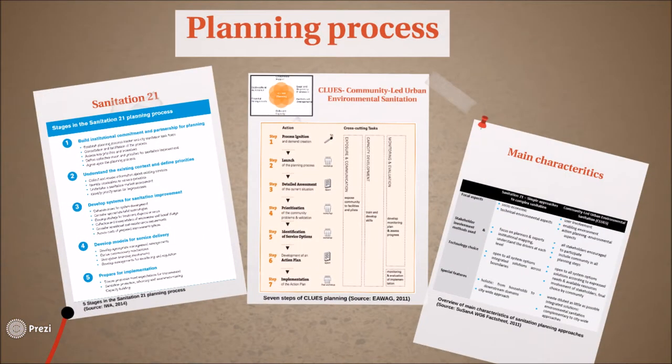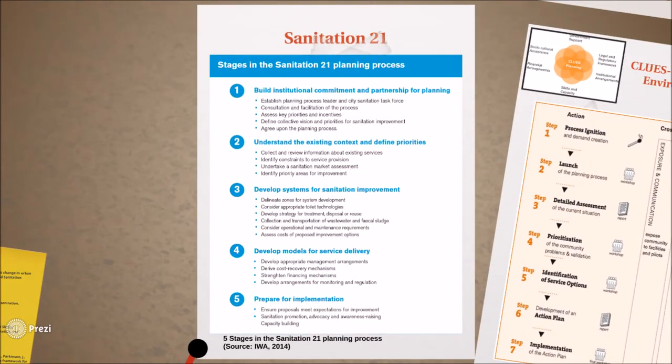Finally, this video presents some interesting and useful planning processes. The first is Sanitation 21, an important component of the Global Sanitation Toolkit, which presents a framework based on internationally recognized practices. This framework was initially developed in 2006 as a tool to help city stakeholders develop appropriate and affordable solutions to sanitation problems. It helps to identify where investments are required, secure the necessary finance for implementation and ensure cost recovery for long-term sustainability of sanitation services. The framework is structured in five main stages.